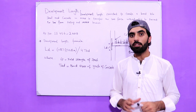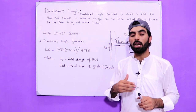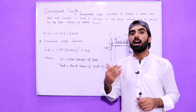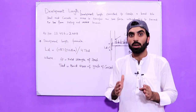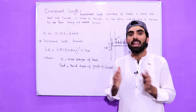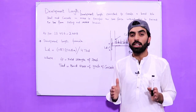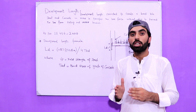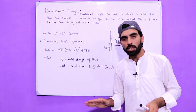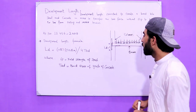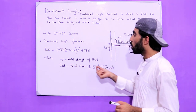For example, if the grade of concrete is M25 or M30, we should take a shorter development length. If the grade of concrete is low, we should keep it longer. So the development length depends on the grade of concrete and the grade of the steel bar.